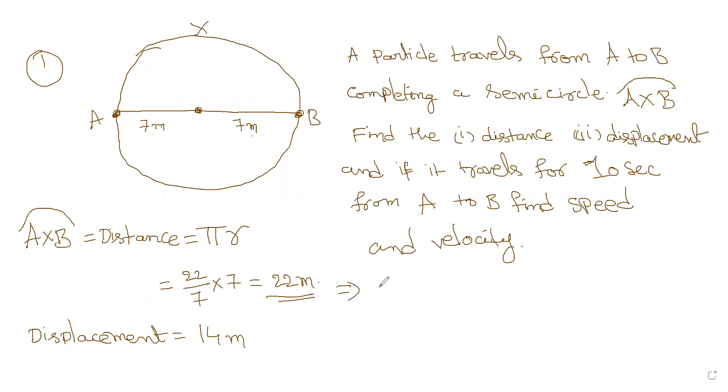Speed. Speed is distance covered by time, distance by time. Distance is 22 divided by time is 10, so that is 10 seconds, which is 2.2 meter per second. Now if you consider displacement, what we get is velocity. Velocity is displacement, that is 14 divided by 10 seconds.